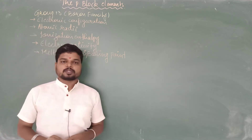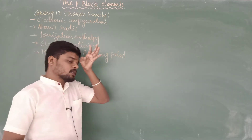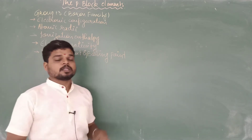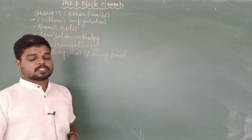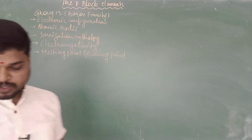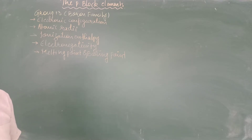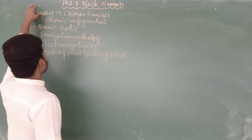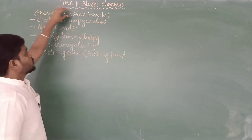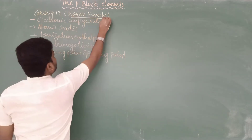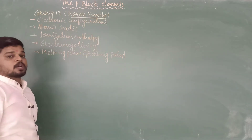Among the general properties covered, we came across electronic configuration, metallic character, non-metallic character, oxidation states, and channel-like properties. Today we are moving on to the main topic of the chapter, that is group number 13, also known as the boron family, because the first element in this group is boron.